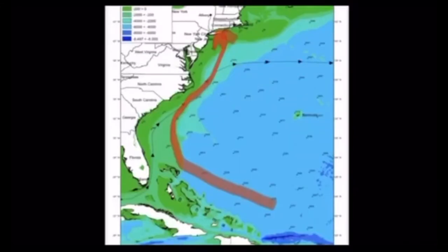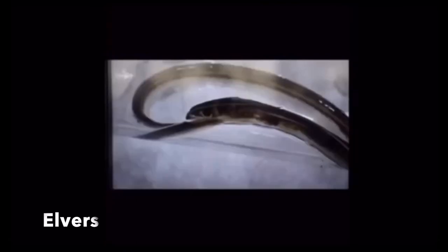And as they journey up the east coast, riding the Gulf Stream, they turn transparent, hence named Glass Eels, and they become the size of your pinky.